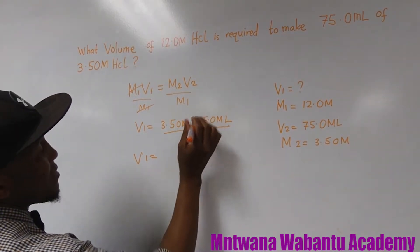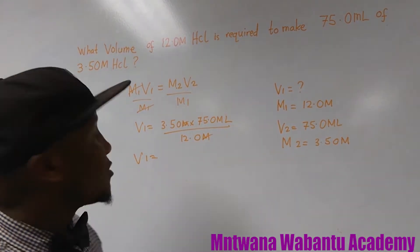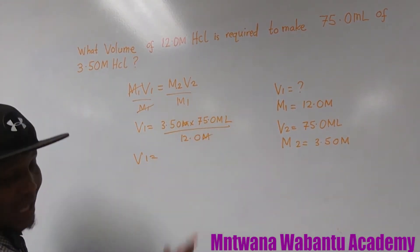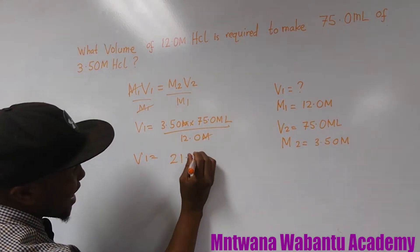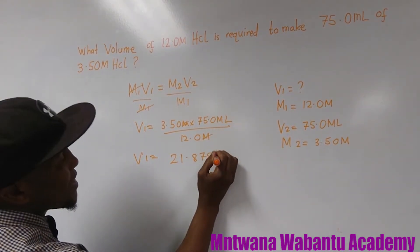So volume 1 equals, the molarities cancel out. So you're going to put this in the calculator and you're going to get V1, 21.875 milliliter.